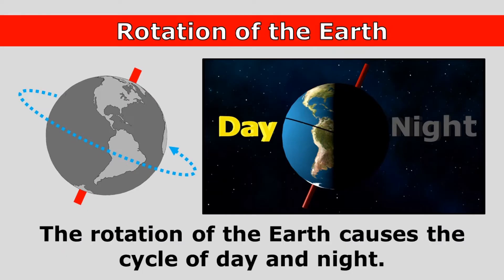The rotation of the earth causes the cycle of day and night. Half of the earth is always lit up by the sun, and as the earth rotates, different parts of the earth rotate into the sunlight and experience day, and then rotate out of the sunlight and experience night.